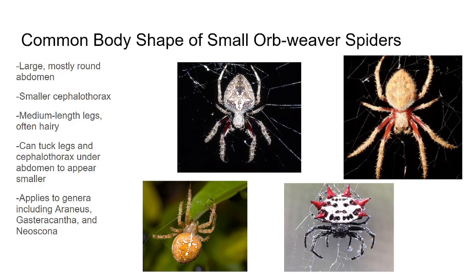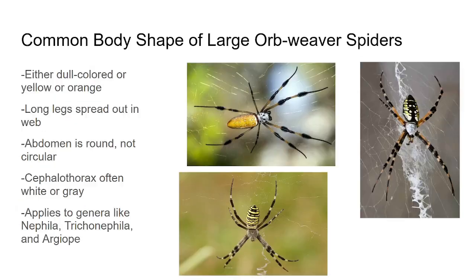So if you ever find an orb weaver spider that isn't in its web, those are some of the things you want to be looking for. Unless, of course, they belong to some other genera like Nephila and Argiope — these are going to be the huge orb weaver spiders. The ones on the previous page are small, about as big as your fingernail, and they don't generally grow bigger than that. These guys can sometimes outgrow your hand — that is how large they are. And they are orb weavers too.